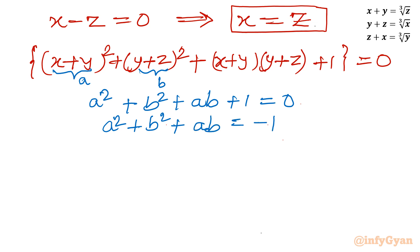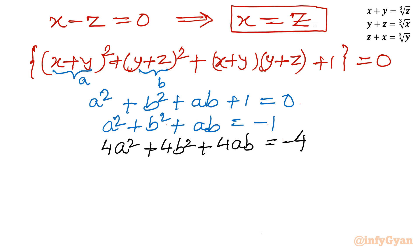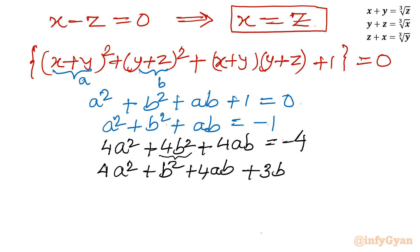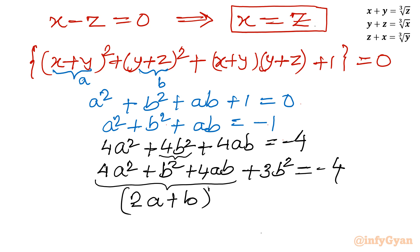Multiply both sides by 4: 4a² + 4b² + 4ab = negative 4. I will split 4b² as b² + 3b²: so 4a² + b² + 3b² + 4ab = negative 4. This gives the perfect square (2a + b)² plus 3b² = negative 4. You can verify: (2a)² = 4a², b² = b², and 2·2a·b = 4ab.